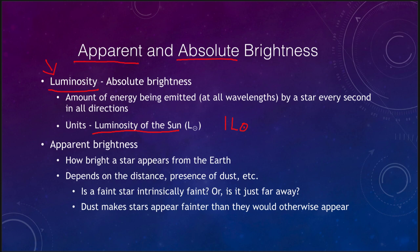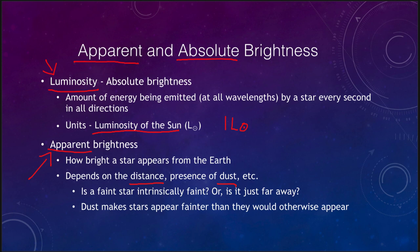That's the absolute brightness — how much energy a star is actually putting out. However, when we look at the stars at night we don't see the absolute brightness. We see only the apparent brightness, or how bright they appear to be from the Earth. That depends on a lot of different things: the distance from the star, since the further away a star is the fainter it will appear, and whether there is dust in the way, since dust can make the star appear fainter than it otherwise would.